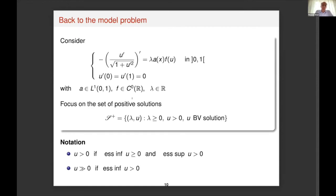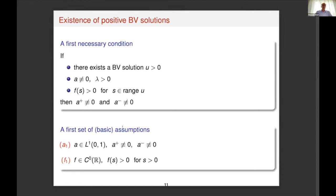We focus on the set of positive solutions — that is, couples (lambda, U) where lambda is non-negative and U is a positive BV solution, meaning a non-trivial, non-negative function. In order to discuss the existence of positive BV solutions, it is convenient to state some necessary conditions. The first, very simple necessary condition is: if there exists a positive BV solution U, the weight function is non-trivial, lambda is positive, and f is positive at least on the range of U, then the weight a must change sign.